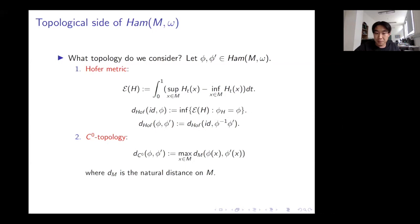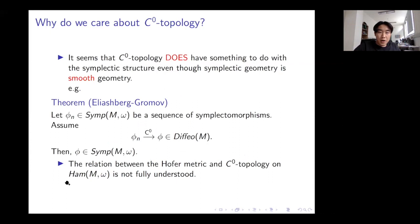The C⁰ topology measures the furthest distance a point can be separated by two Hamiltonian diffeomorphisms. We care about C⁰ topology because it has something to do with the symplectic structure even though symplectic geometry is about smooth objects. One sign of this is a theorem due to Eliashberg and Gromov: if you have a sequence of symplectomorphisms converging to a diffeomorphism in the C⁰ topology, then the limit is a symplectomorphism.